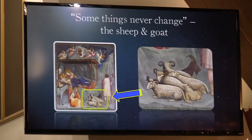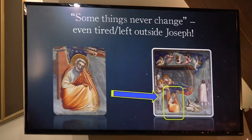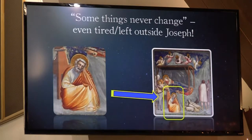Giotto has included the same type of image. The ox and the donkey were present in last week's image, and they're here again tonight. And of course you've got the ever-tired Joseph, outside of the area where Jesus and Mary are, just like last week. Again this week, Joseph appears outside of that, and like last week, his head is on his hand — he's resting, he's tired.